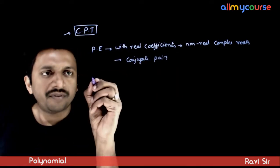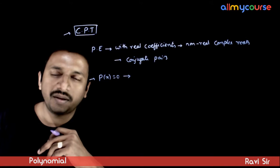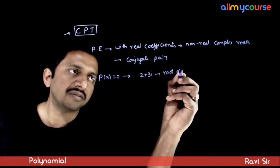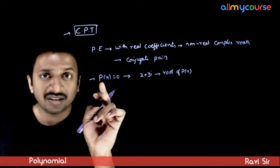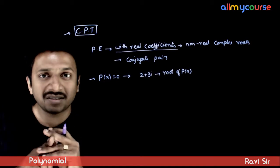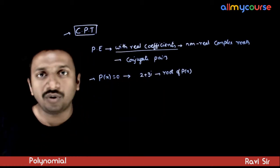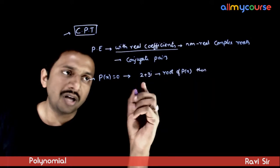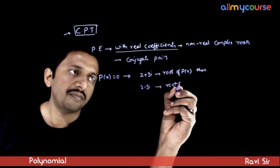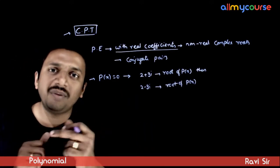For example, if you have a polynomial equation p(x) = 0, and it is given that 2 + 3i is a root of p(x) — assuming that p(x) has all real coefficients, which is an important condition to remember — then its conjugate 2 - 3i will automatically also be a root of p(x).